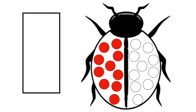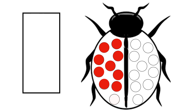Ladybird has 10 spots. 1, 2, 3, 4, 5, 6, 7, 8, 9, 10. How many more does she need to make 10?